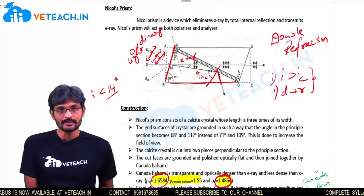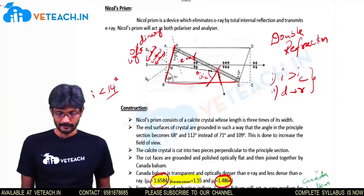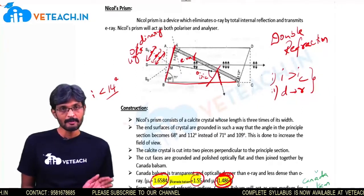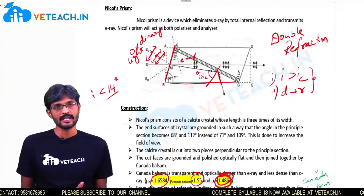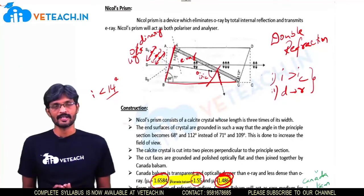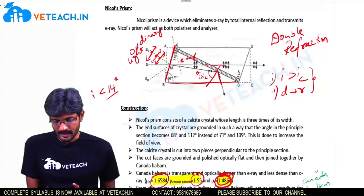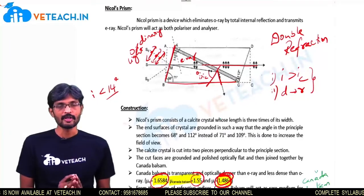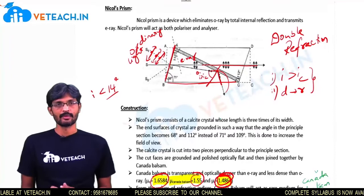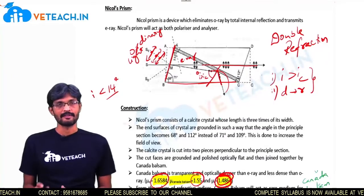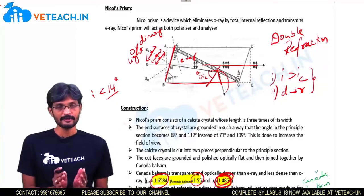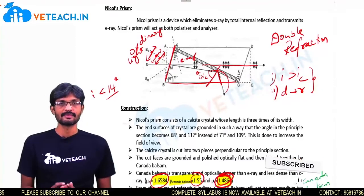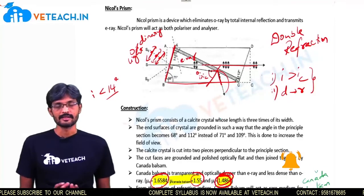For the E-ray, it travels through the calcite crystal with a refractive index of 1.48, and the Canada Balsam has a refractive index of 1.55. So the E-ray travels from a rarer medium to a denser medium. When light moves from rarer to denser medium, there is no total internal reflection, and the E-ray passes through the Nicol Prism and emerges out. Finally, only one plane polarized light is produced. The Nicol Prism eliminates the O-ray by total internal reflection and transmits the E-ray, and is therefore used in special displays like LCDs and LEDs. Thank you.